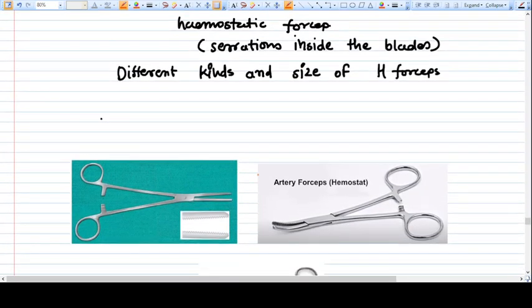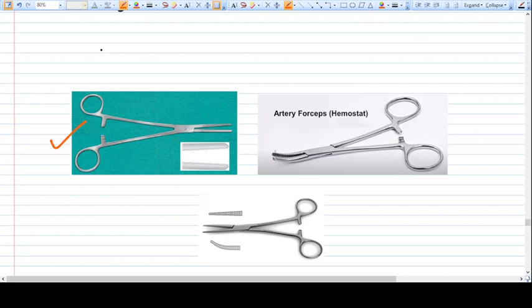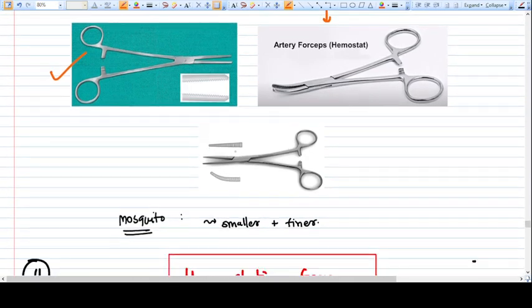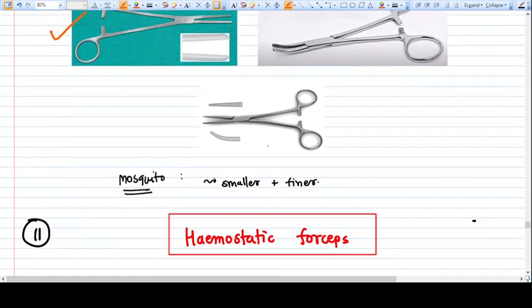There are different kinds and sizes of hemostatic forceps available. This is a long hemostatic forceps - some people call it a clamp - which is used in hysterectomy. This is medium size artery forceps in which the mechanism is the same. Here is a small mosquito forceps - they can be curved or straight, but the design remains the same.